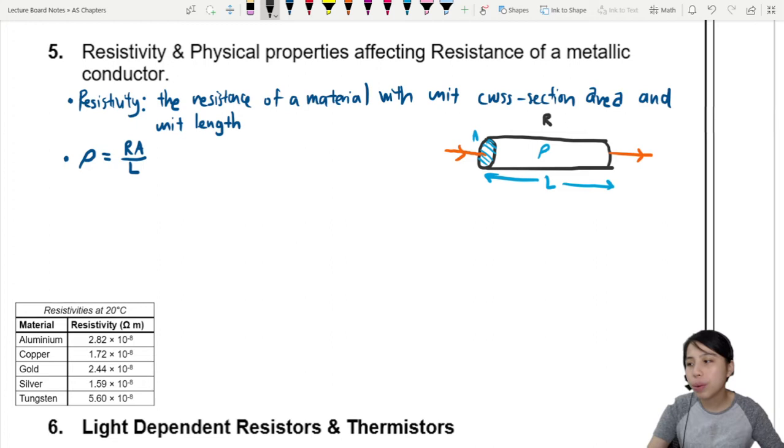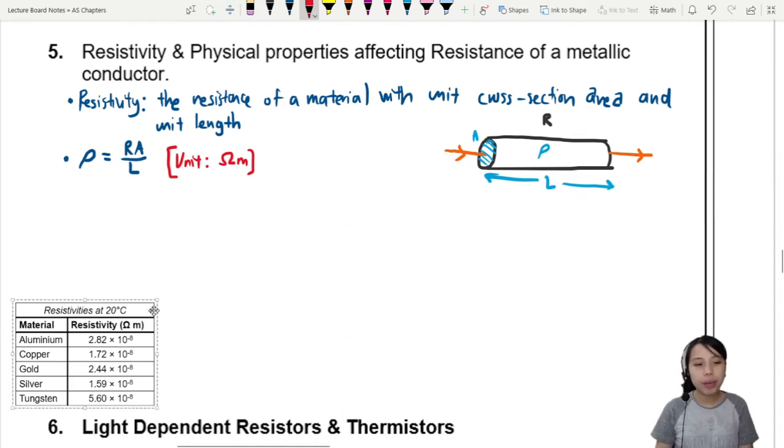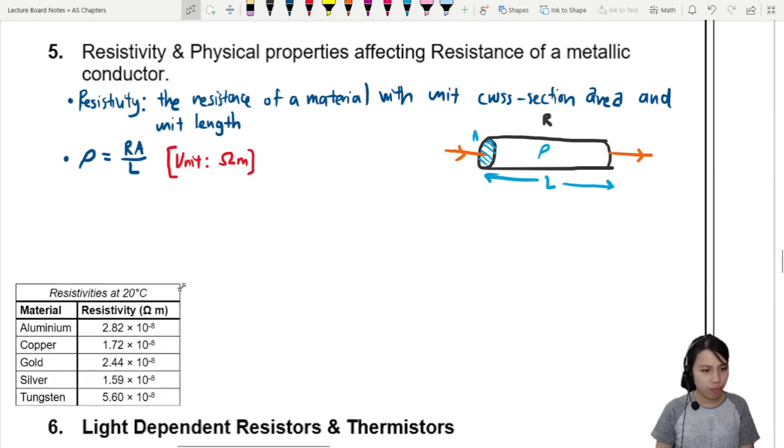The unit of this resistivity is, if you use some paper one skills, R times A over L, that will be the unit of Ohm meter. If you look at the small table down here, we got some sample resistivities. Depending on different materials you have different resistivity. If it's aluminium you have 2.82 times 10^-8. If you got copper it's different values. Tungsten has the highest resistivity.